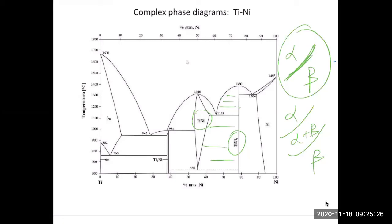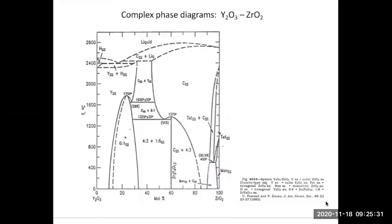For those interested in oxides, here's the yttria-stabilized zirconia phase diagram. Again it looks very complicated and intimidating at first, but you can go through it using the same local approach.